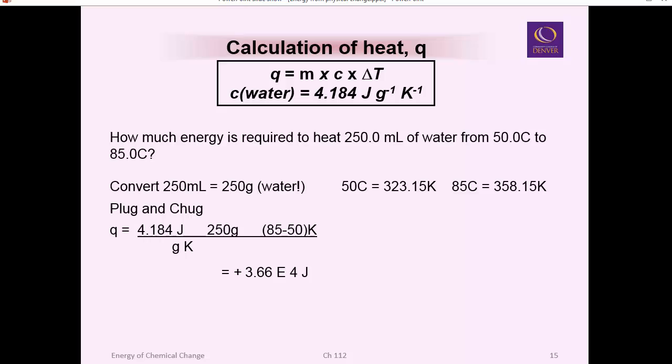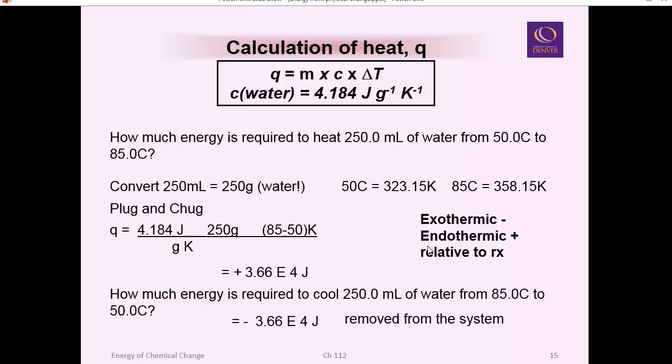And the last step is this. You need to think about whether it's endothermic or exothermic. If you're heating something up, it took energy in, so traditionally you put a positive sign on that. So conversely, how much energy is required to cool the same amount of water from 85 to 50? In other words, we're going to cool it the same amount that we heated it. The calculation is exactly the same. The difference is, because now you're cooling it, you've got to let the energy leave the water to cool it off. So the sign that you put on there, it's exothermic, is classically a negative sign. Anything that's exothermic is negative, and endothermic is plus, and that's relative to the reaction.